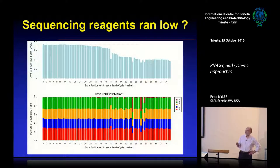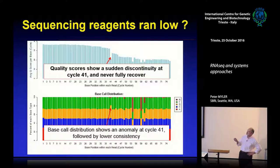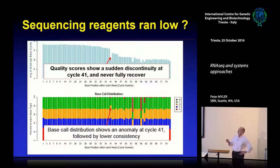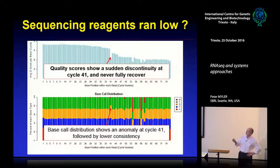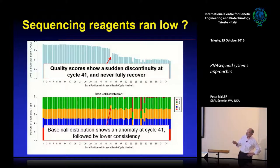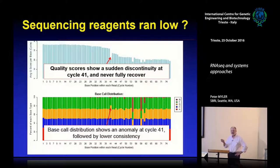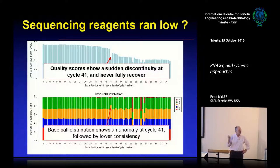Here's a case that doesn't look so good. This 75-nucleotide run shows base quality is good until cycle 41, then something bad happened and the quality dropped and never really recovered. You can also see a lot of reads ending at that position. Something happened at cycle 41. We did analyze this data and I'll show you what happened later.